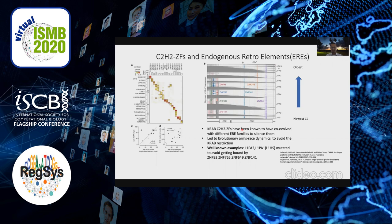After that, these endogenous retroelements entered an arms race with these KRAB zinc fingers, starting to mutate to avoid getting bound by the KRAB zinc fingers which were trying to silence them. This led to arms race dynamics, where many of these retroelements started developing mutations and deletions which would prevent them from getting bound by these KRAB zinc fingers.